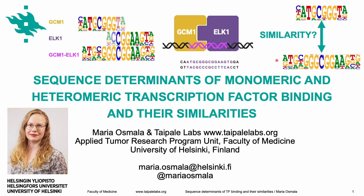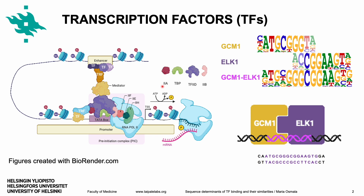Sequence-specific binding of transcription factors at non-coding cis-regulatory elements drives expression of target genes. The sequence preferences of TFs, often referred to as motifs, are visualized here as sequence logos. However, as TFs often cooperate with each other to achieve binding, it is also important to determine the heterodimeric motifs for a pair of TFs. The motifs for heterodimeric binding are largely unknown, and they may differ from the corresponding monomeric motifs.